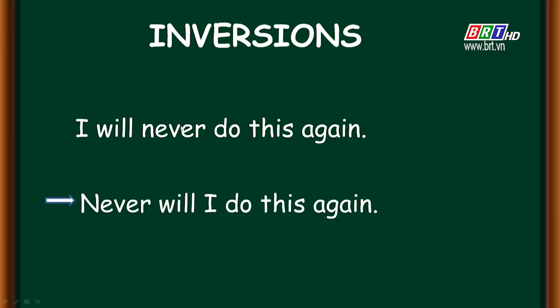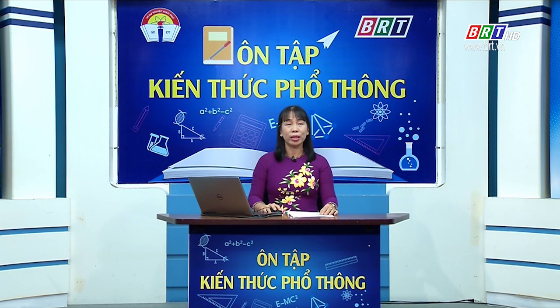Tuy nhiên, để nhấn mạnh hơn lời hứa này, chúng ta có thể nói cách khác: 'Never will I do this again.' Trong trường hợp này, trạng từ 'never' được đặt lên đầu câu, và cấu trúc câu thay đổi thành giống như cấu trúc câu hỏi. Đây chính là đảo ngữ — nội dung mà cô muốn giới thiệu ngày hôm nay.